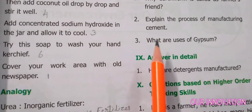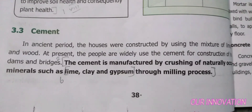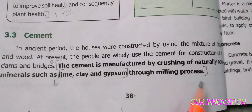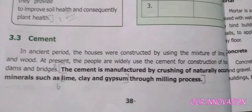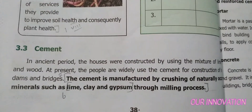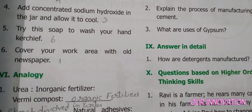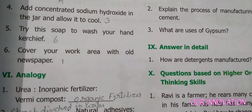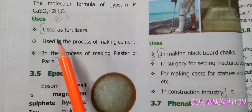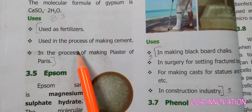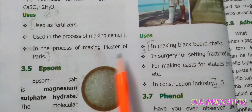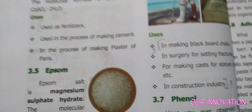Question: Explain the process of manufacturing cement. Answer (page 38): Cement is manufactured by crushing naturally occurring minerals such as lime, clay, and gypsum through a milling process. Question: What are the uses of gypsum? Answer (page 40): It is used as a fertilizer, in the process of making cement, and in the process of making plaster of Paris.